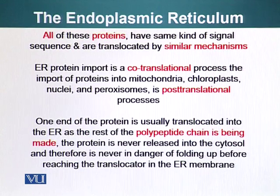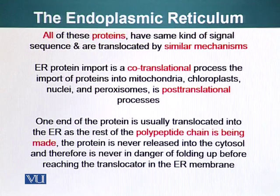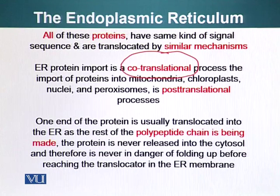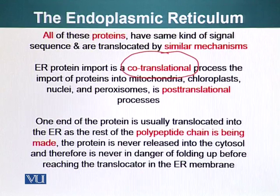All of these proteins have the same kind of signal sequence and are translocated by a similar mechanism. It is important to emphasize that ER transport is co-translational, meaning proteins are not fully manufactured before entering — they are partly made when they bind the ER, and as the protein is being synthesized, it is being injected into the lumen of the ER. This contrasts with the post-translational process seen in mitochondria or nucleus. One end of the protein is translocated into the ER as the rest of the polypeptide chain is being made, so the protein is never released into the cytosol and is never in danger of folding up before reaching the translocator in the ER membrane.